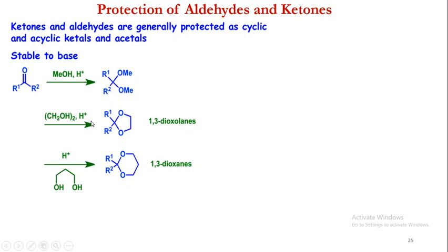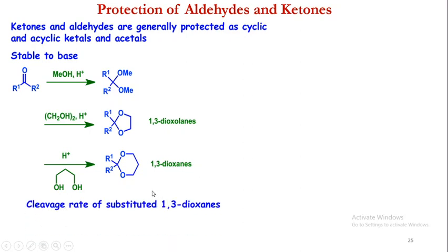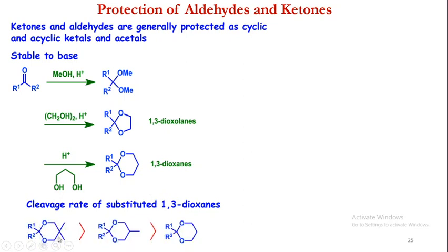Another way is to form 1,3-dioxolanes. This can be formed by using a diol in the presence of an acidic medium. The cleavage rate of substituted 1,3-dioxolanes follows that more substituted dioxolanes are more easily cleaved than less substituted dioxolanes.